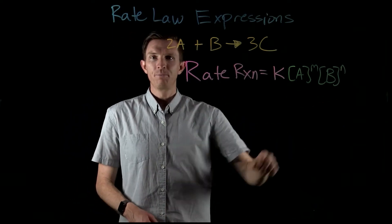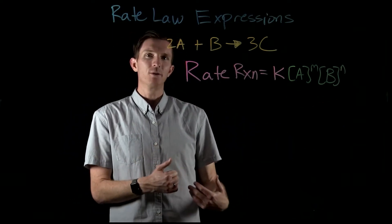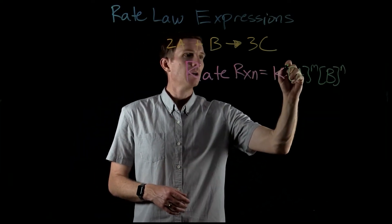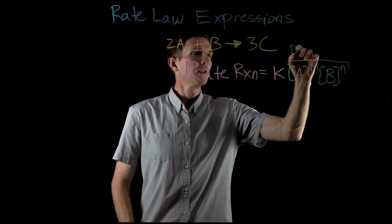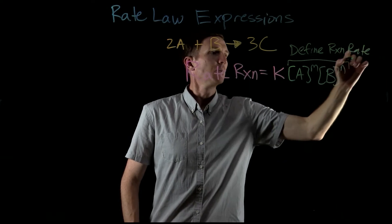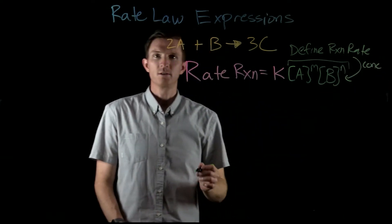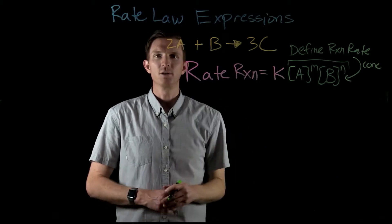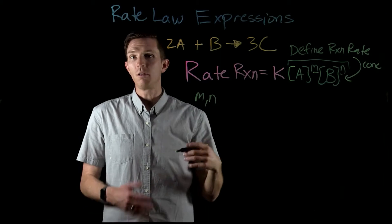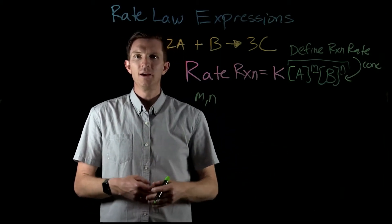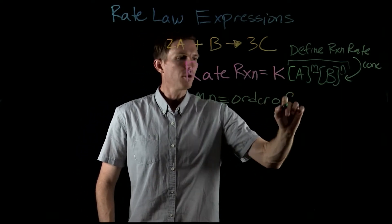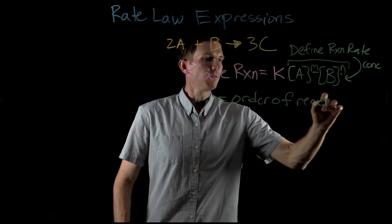This is our rate law expression, and each of these pieces describe certain aspects of our rate's dependence. This part defines the reaction rate dependence on concentrations — the concentration of A or concentration of B. The variables M and N — we could call them anything — we define these as the order of those reactants.